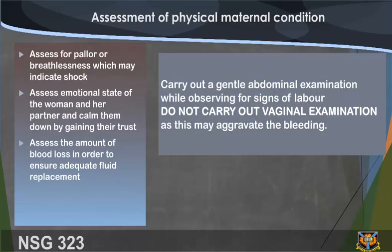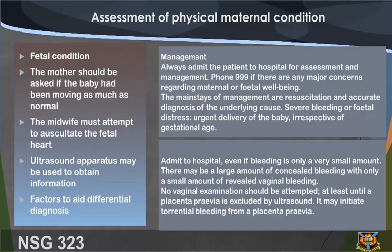Assessment of physical maternal condition: assess for pallor or breathlessness, which may indicate shock; assess the emotional state of the woman and her partner and calm them down by gaining their trust; assess the amount of blood loss to ensure adequate fluid replacement; carry out a gentle abdominal examination while observing for signs of labor. Do not carry out a vaginal examination, as this may aggravate the bleeding. The mother should be asked if the baby has been moving as much as normal, and the midwife must attempt to auscultate the fetal heart; ultrasound may be used.